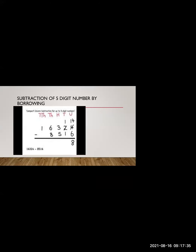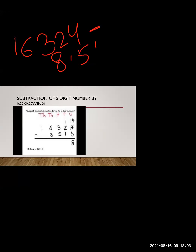Here is our example. You have to subtract sixteen thousand three hundred and twenty four minus eight thousand five hundred and sixteen. So first of all, we will write the first number, and below that we will write the second number, which is eight thousand five hundred and sixteen.